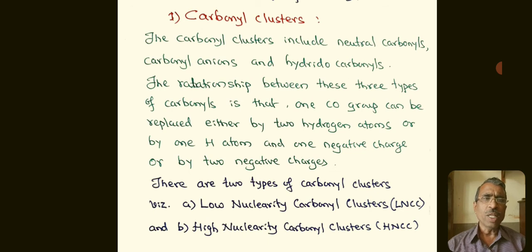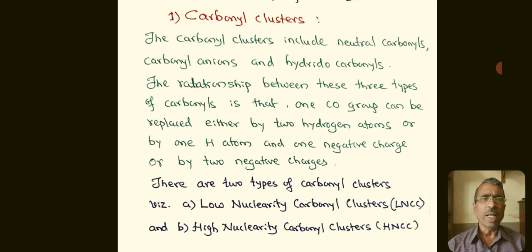The carbonyl clusters include neutral carbonyls, carbonyl anions, and hydridocarbonyls. The relationship between these three types of carbonyls is that one carbonyl group can be replaced either by two hydrogen atoms, or by one hydrogen atom and one negative charge, or by two negative charges.